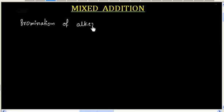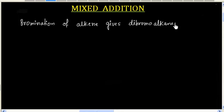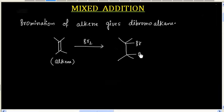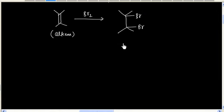Bromination of an alkene gives dibromoalkane. For example, let us consider this reaction. We have an alkene and this is treated with bromine. The final product we will have is dibromoalkane.